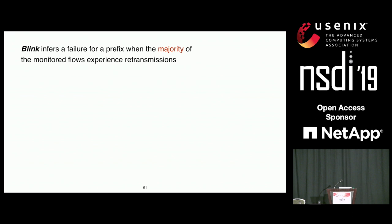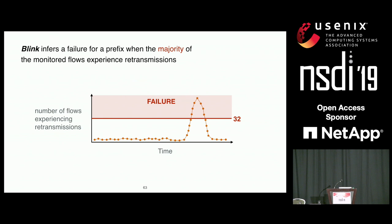Finally, Blink infers a failure whenever the majority of monitored flows for a given prefix experience retransmissions. In our previous example, whenever we are above the threshold of 32 — which is half of 64 — Blink infers a failure.